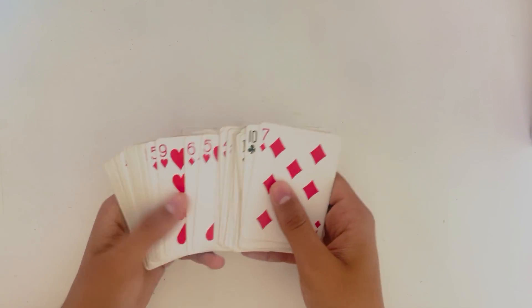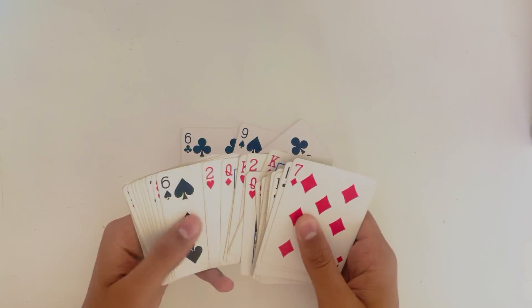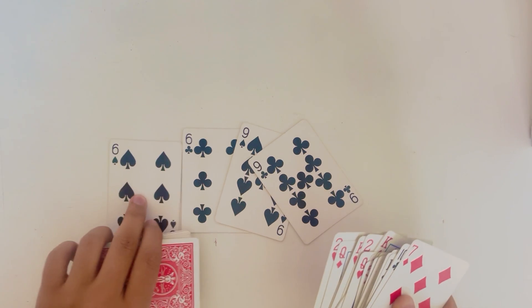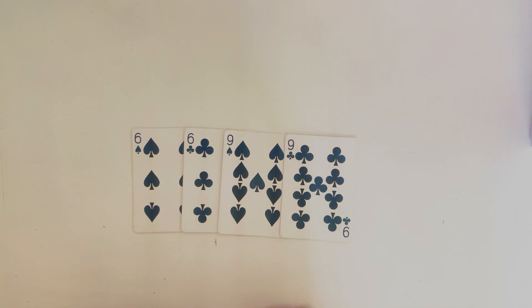For this trick you're going to need these four cards and they look really similar. So if you just show in the beginning a black six and a black nine, you don't specify which ones they are, the audience won't really pay attention and they won't know which card is which exactly.